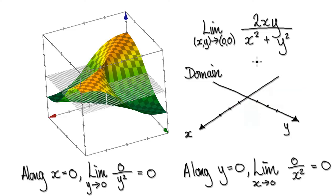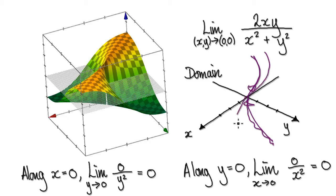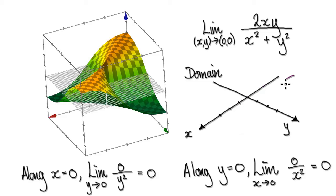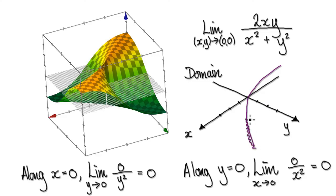Or maybe consider approaching the origin in a cubic manner, like y equals x to the power of 3. You're approaching the origin in a manner of y equals x cubed. Or e to the power of x minus 1 will look something like this — you could approach the origin in an e to the power of x manner as well. So the whole point is, you could approach your origin in all possible directions.